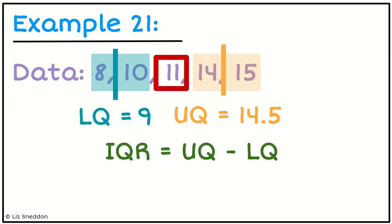So now we can calculate the interquartile range, which is that upper quartile minus the lower quartile. So 14.5, take away 9, gives us an answer of 5.5.